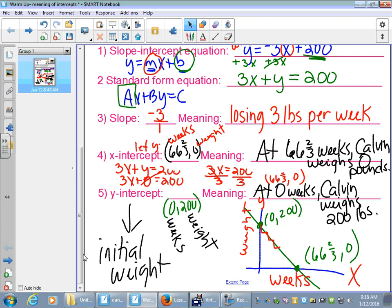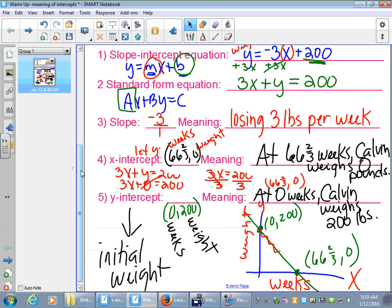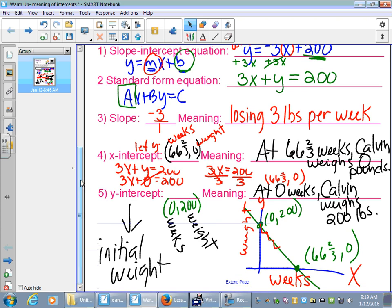So make sure you have your slope-intercept form of that scenario. You have your standard form. You have the slope and what it means. You have your x-intercept of 66 and 2 thirds, and what that means in this context. And you have your y-intercept of 200, and what that means in this context. All right, we're going to practice more of that today. So you can close this out and go ahead and go to or finish the rest of your lesson. Thanks.